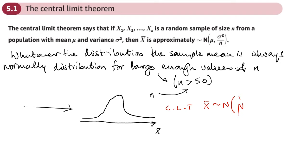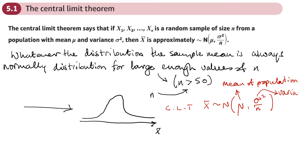We can use the central limit theorem to do calculations on this sample mean — for example, to work out the probability that the sample mean is going to be greater than or smaller than a certain value. By the central limit theorem, the sample mean will be normally distributed with a mean equal to the mean of the population, and a variance equal to the variance of the population divided by the sample size N. To apply the central limit theorem, we want the sample size to be greater than 50.